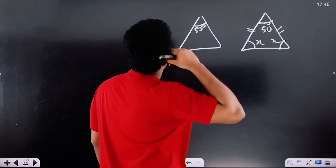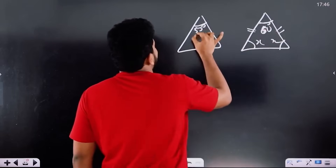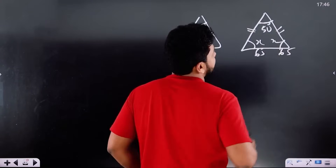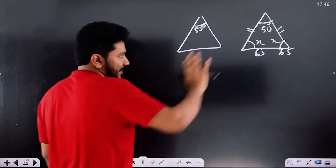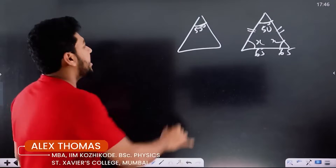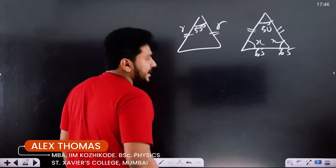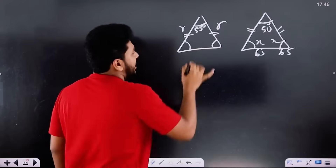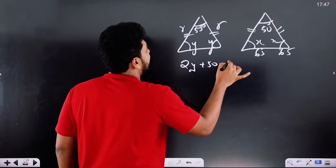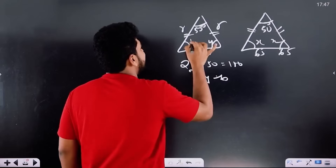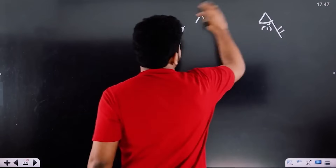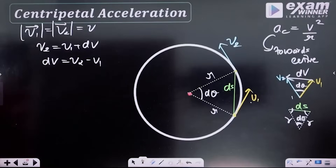That means these two triangles are similar. One angle is the same — dθ — plus they are isosceles triangles, so the two triangles are similar. Let's say triangle A is similar to triangle B. Similar triangles have sides in ratio: dv by v equals ds by r.